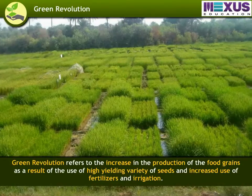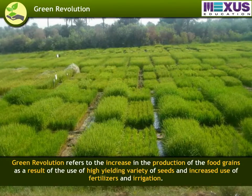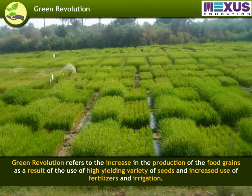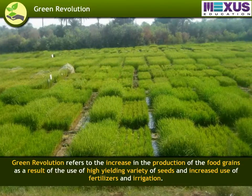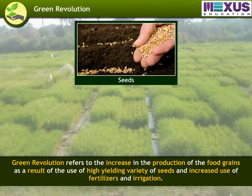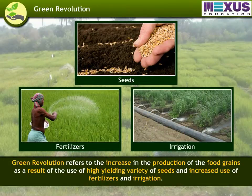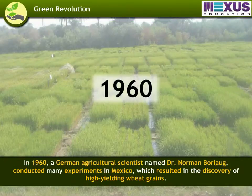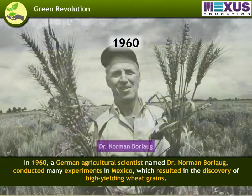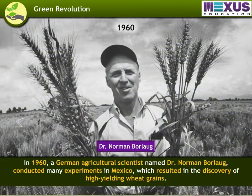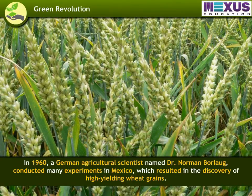Green Revolution refers to the increase in the production of food grains as a result of the use of high-yielding variety of seeds, increased use of fertilizers, and irrigation. In 1960, a German agricultural scientist named Dr. Norman Borlaug conducted many experiments in Mexico which resulted in the discovery of high-yielding wheat grains.